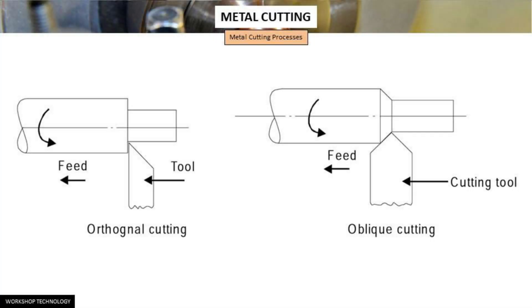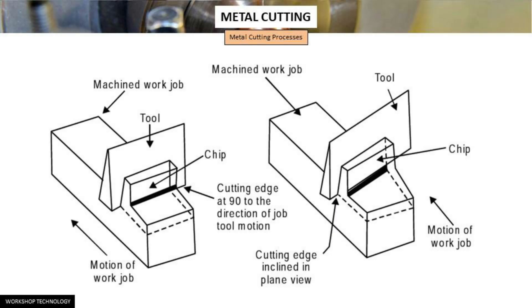As you can see here, there are two metal cutting operations: orthogonal cutting and oblique cutting. In orthogonal cutting, the cutting edge is at 90 degrees to the direction of the job-tool motion. Whereas in oblique cutting, the cutting edge is inclined in plain view.